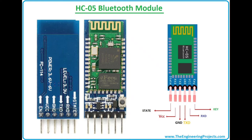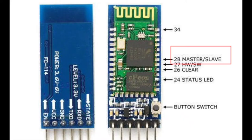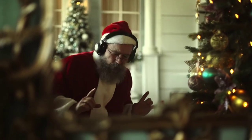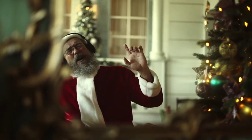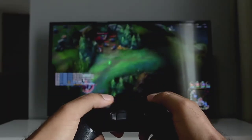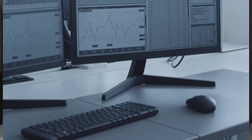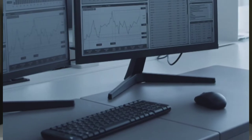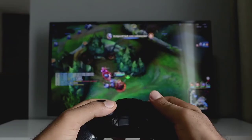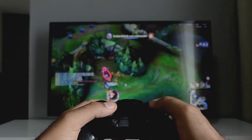HC-05 is a Bluetooth module which is used for wireless communication. This module can be used in a master or slave configuration. It is used for many applications, for instance wireless headsets, game controllers, wireless mice, wireless keyboards, and many other consumer applications.